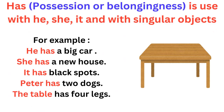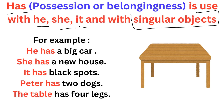So where do we use 'has'? Has is used with he, she, it, and with the singular object. Singular objects — what are they? One thing. Like, this is a table — how many tables? One table. So we will put 'has'.